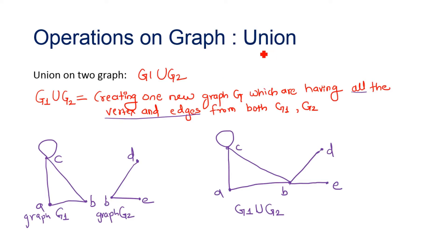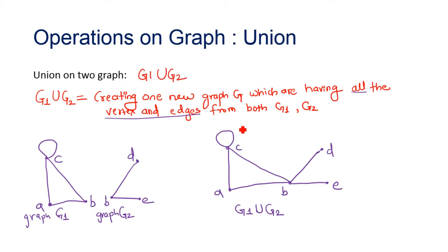First is union of two graphs. When we want to unite two graphs, the union of two graphs is represented by G1 union G2. Here we create one new graph G which has all the vertices and edges from both the graphs.